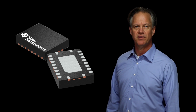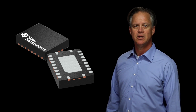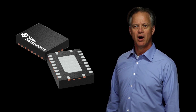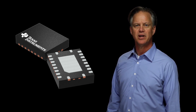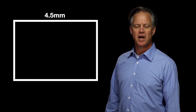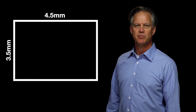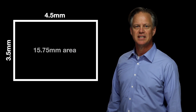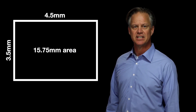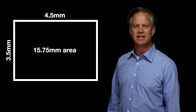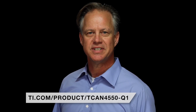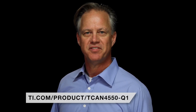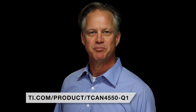The device is offered in a small 20-pin QFM package supporting wettable flanks for optimal automated optical inspection. Measuring 4.5 millimeters by 3.5 millimeters, the solution utilizes less board space than standard SOIC package CAN transceivers. Get started with the TCAN 4550 Q1 by visiting the link below. Thank you for watching!